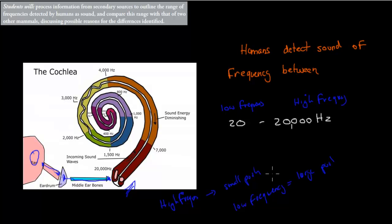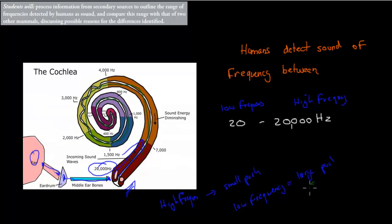If we have a high frequency, that means the water only gets pushed a bit, so only a certain amount of hair cells get activated, and that would tell us we have a high pitch sound. Whereas if we have a low frequency, that means a large push, so the water will travel further through the cochlea, activate more hair cells, and our brain will know it's a low frequency, low pitch sound.